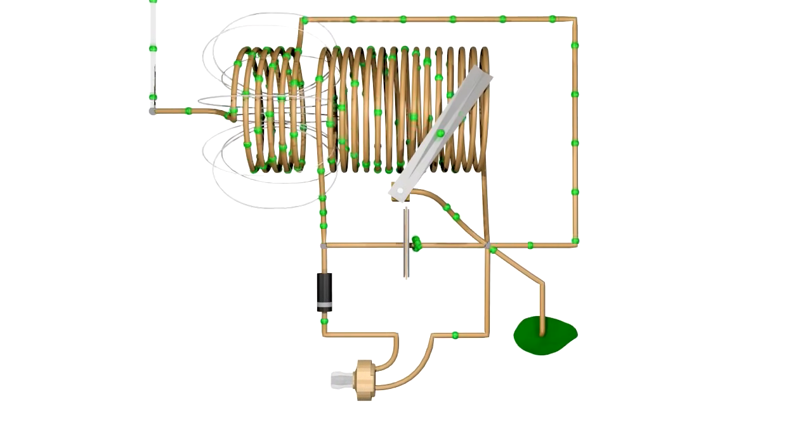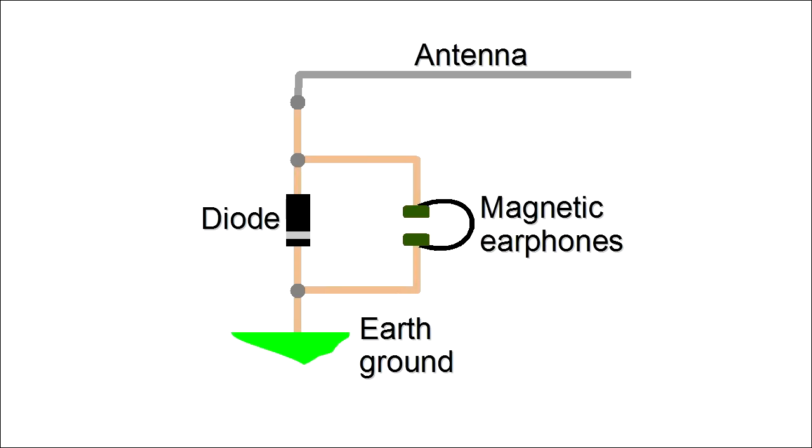There are a very large number of different crystal radio circuits to play with. One of the first ones was this one, consisting of just an antenna, a diode, some earphones, and a connection to earth ground. Notice there is no obvious way to tune this one to a specific radio station. The antenna does have some capacitance, and so adjusting the length of the antenna can be a form of tuning, but it's still possible to hear multiple radio stations at the same time.